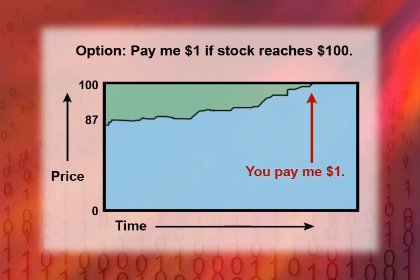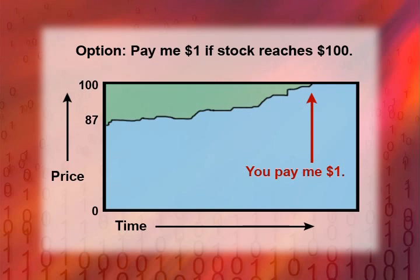Here's an example of an option: you will pay me $1 if XYZ stock reaches $100. I own this option — it's a contract where you will pay me $1 if something happens in the future. Today, let's suppose the stock is selling for $87. How much should I pay to acquire the option to get $1 if it reaches $100?